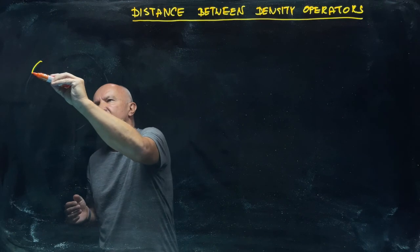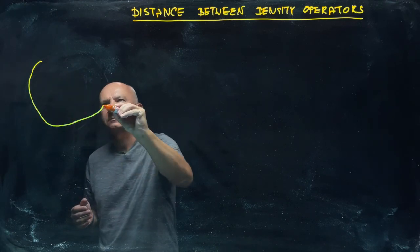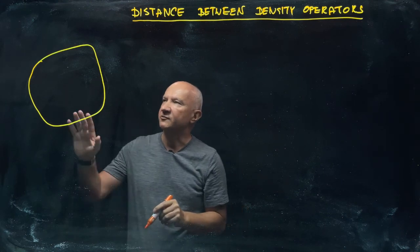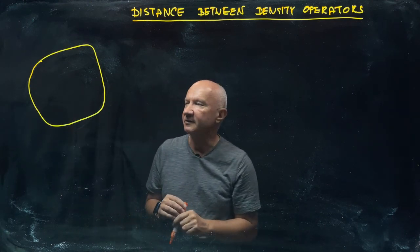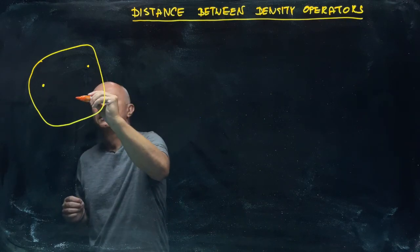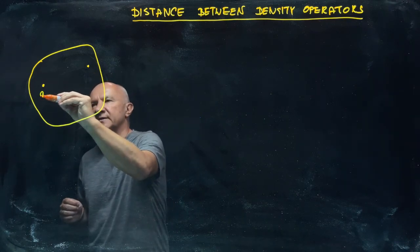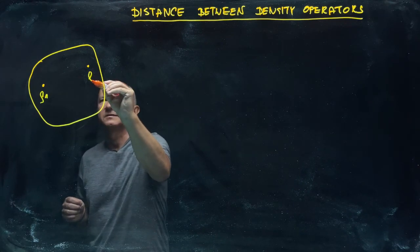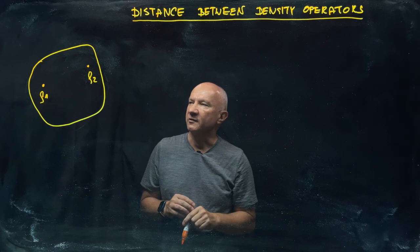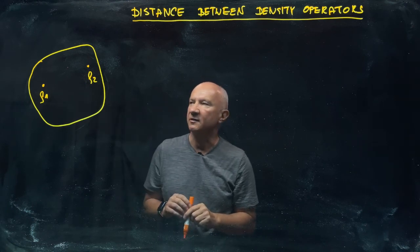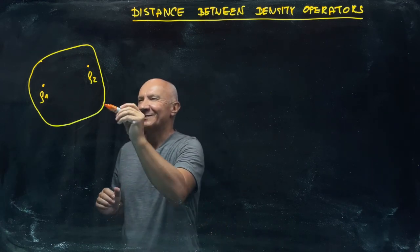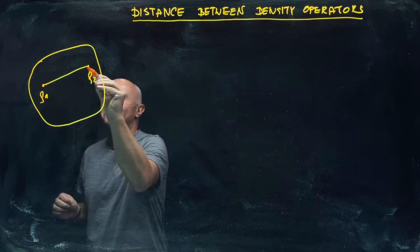Density operators form a convex set, so that's why I'm drawing my potato more carefully this time. All this means that if you pick up two points representing density operators ρ₁ and ρ₂, then any convex combination of ρ₁ and ρ₂ is also a legal density operator. But that's not what I'm going to talk about. I want to talk about the distance between two density operators.